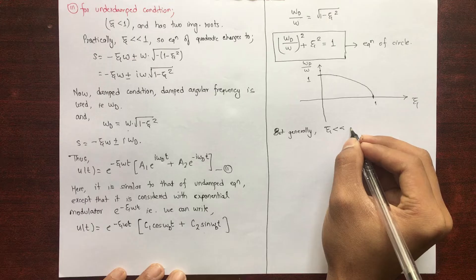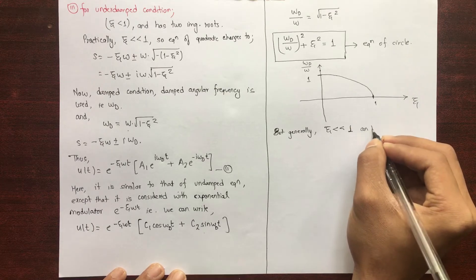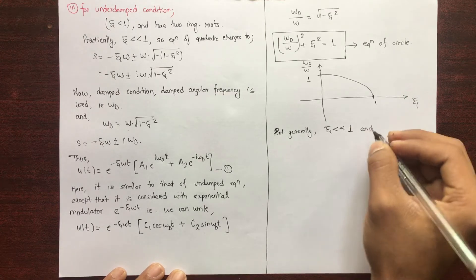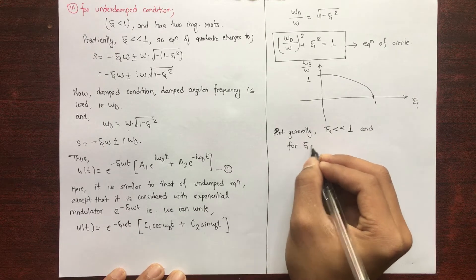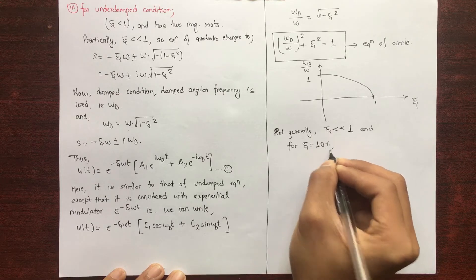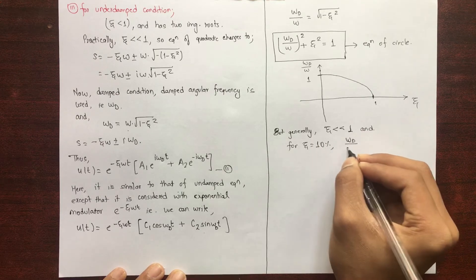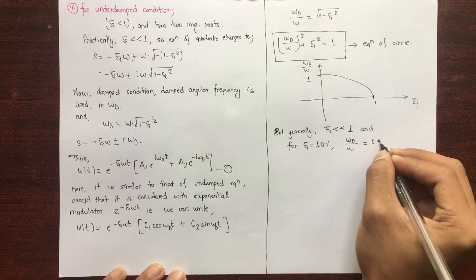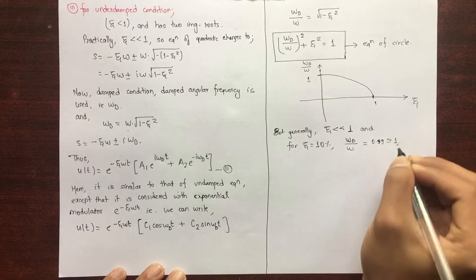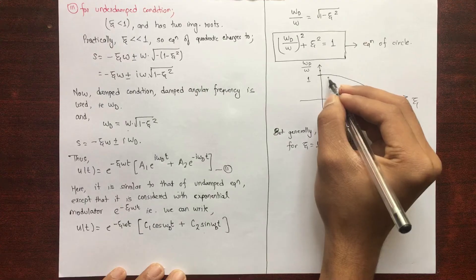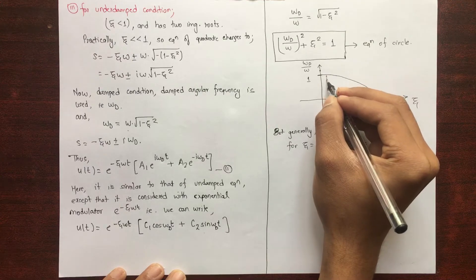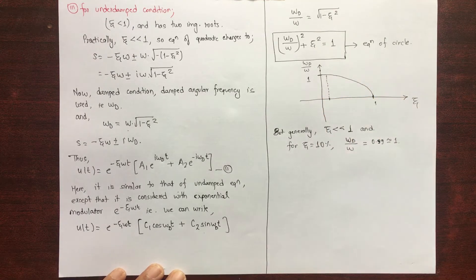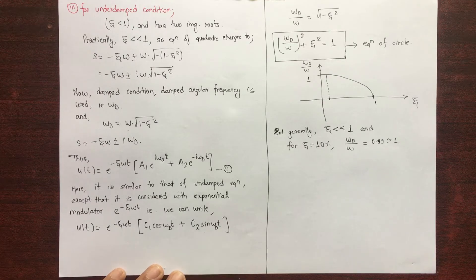Generally ξ is very much less than one, which is the underdamped condition. For ξ equal to 10% (0.1), ω_d/ω equals 0.99, which is nearly equal to 1. So for ξ = 10%, ω_d/ω is nearly equal to 1.